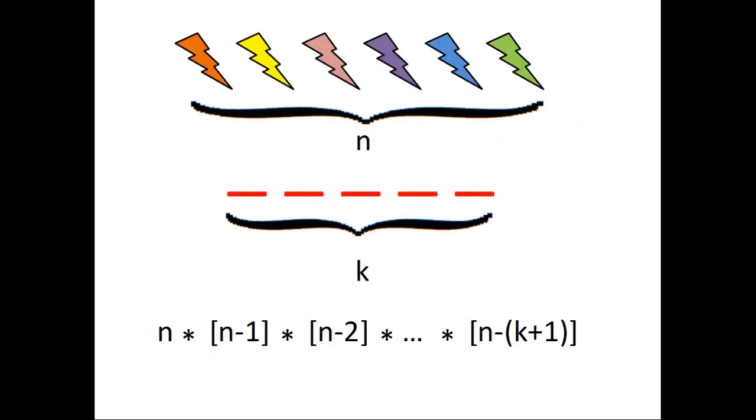Now, using our new notation, the number of ways to rearrange k objects from a list of n objects in total equals n factorial divided by n minus k factorial. And that is the idea behind permutations.